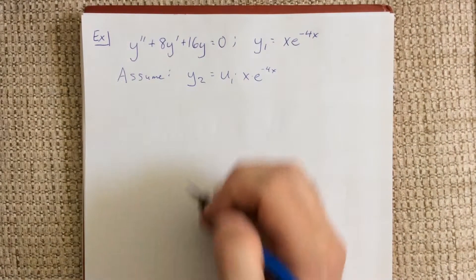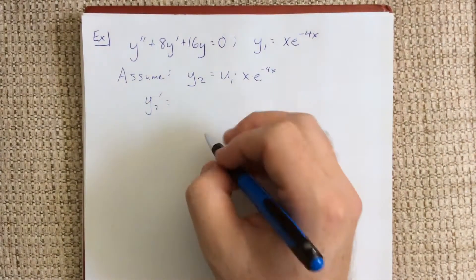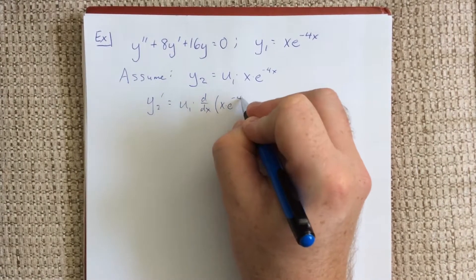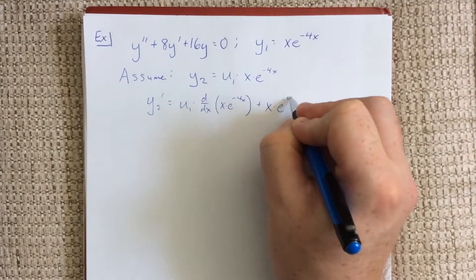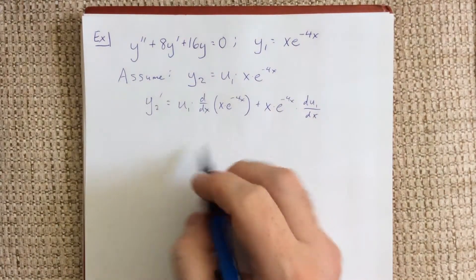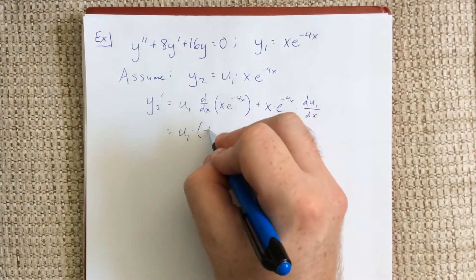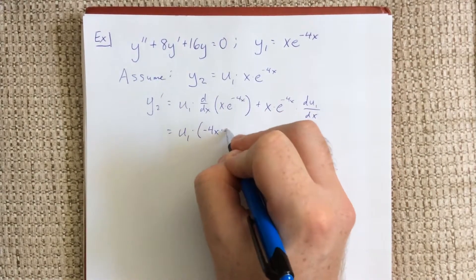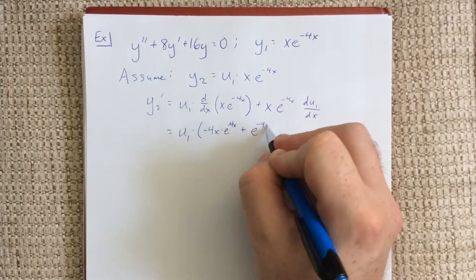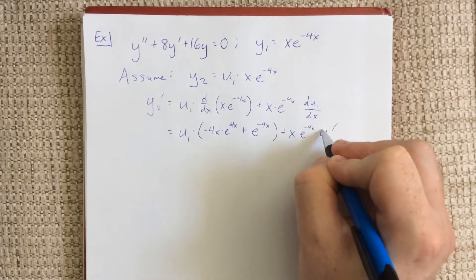We are going to have to take two derivatives of y2 = u1 · x · e^(-4x), so this is going to require use of the product rule. The first derivative is: first times derivative of the second plus the second times the derivative of the first. So y2 prime will be u1 times negative 4x times e to the negative 4x plus e to the negative 4x, plus x times e to the negative 4x times u1 prime.